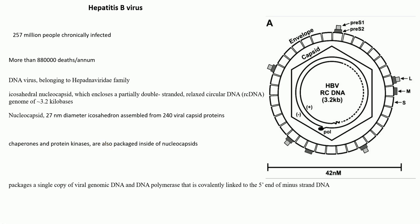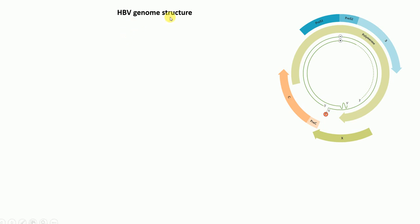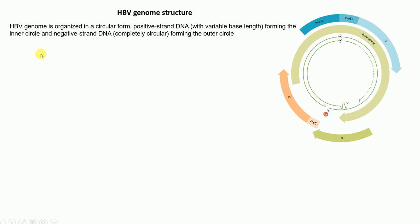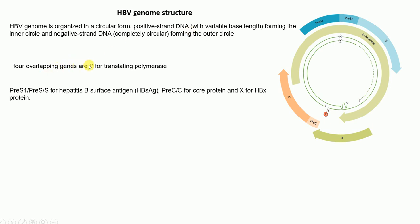Now let's talk more about the hepatitis B virus genome. Hepatitis B virus has a circular, partially double-stranded, relaxed DNA with plus and minus strands. The minus strand is on the outside and is completely circular; the plus strand is on the inside, which is not completely circular, as shown by the dots, with variable base pairs. With the negative strand on the outside, we have the P protein. So basically, we have four overlapping genes: one open reading frame that's pre-S1, pre-S2, and S; another is pre-C and C; another is S; and one is the polymerase.